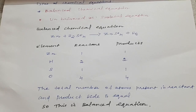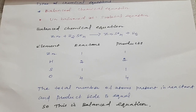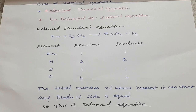The next heading is types of chemical equations. What are the types? First one is a balanced chemical equation. Second one is an unbalanced or skeletal equation. So, first — balanced chemical equation. Example: zinc reacts with sulfuric acid (H2SO4), it will produce zinc sulfate and hydrogen.